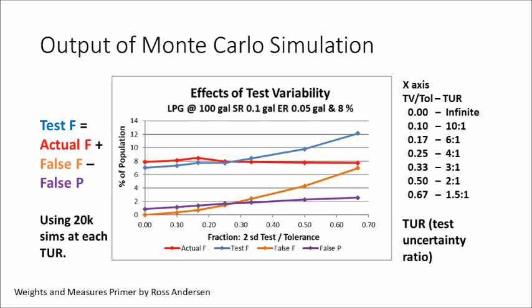I will be simulating at the equivalent of test uncertainty ratios of infinity, 10 to 1, 6 to 1, 4 to 1, 3 to 1, 2 to 1, and 1.5 to 1. At each point, I will be doing 20,000 simulations, for a total of 140,000 simulated tests, which the computer can do in a matter of seconds.